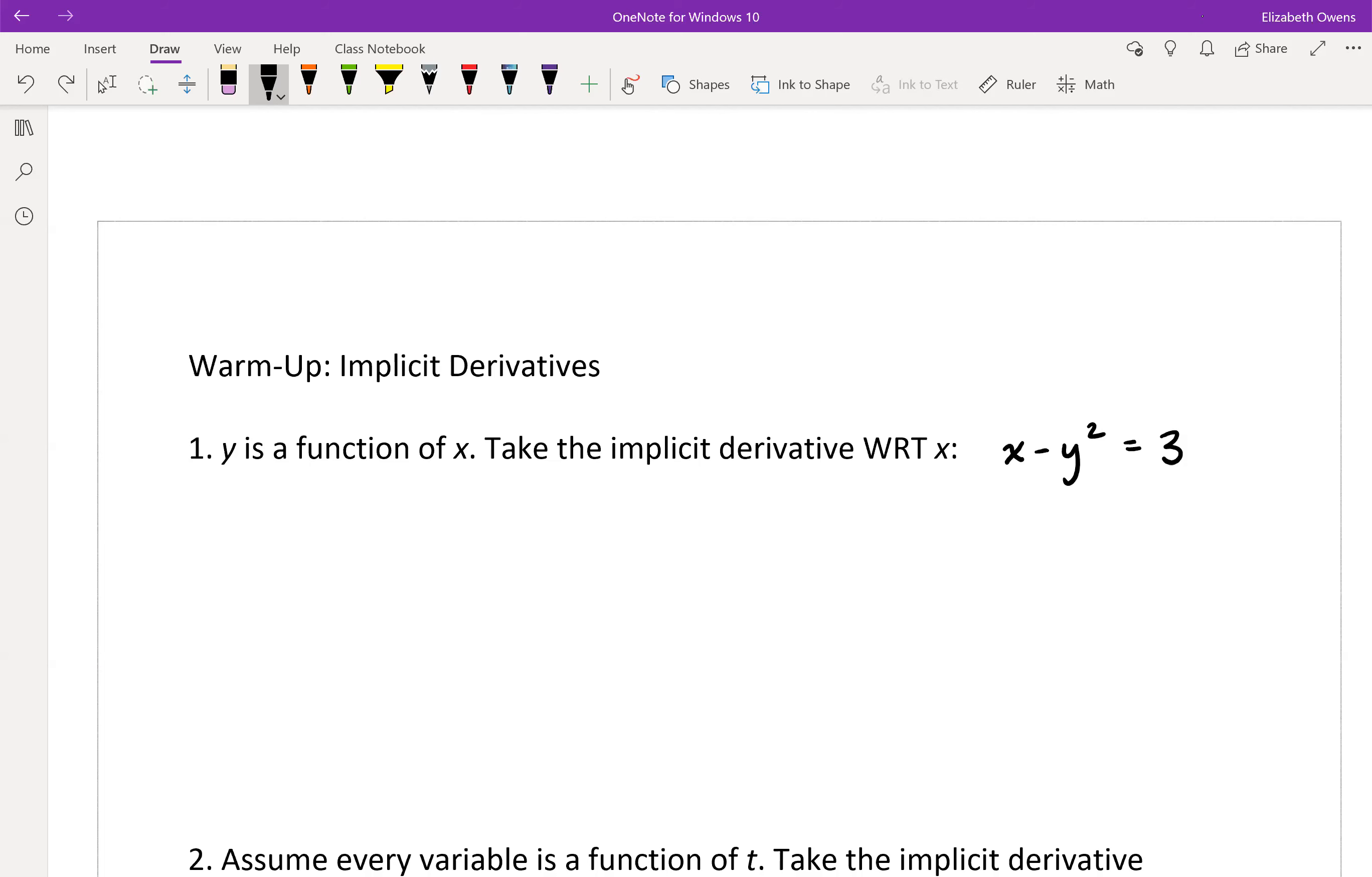Our idea for the implicit derivative is to take the derivative of everything, the whole equation on both sides, and we are told to do this with respect to x. That's what the wrt is for. This is pretty common shorthand, or with respect to. So we're taking d dx of x minus y squared, and then do both sides of the equation, so that equals d dx of 3.